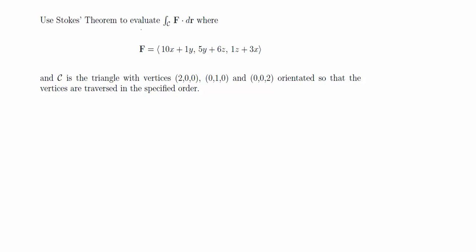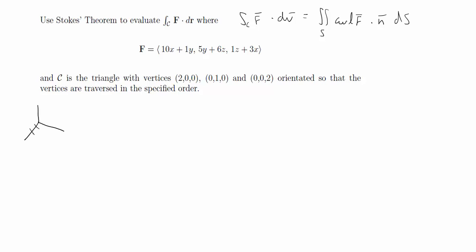This is another Stokes' theorem problem. We're given a line integral with the vector field and the curve, and we're asked to solve using Stokes' theorem. Since we're given the curve, we're going to evaluate it as a surface integral. The curve is a triangle going counterclockwise — 1 on y and 2 on z — so the surface is going to be a plane.